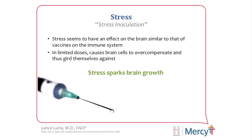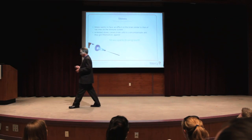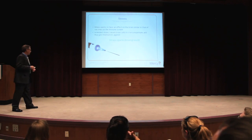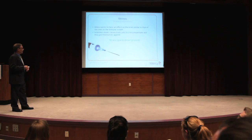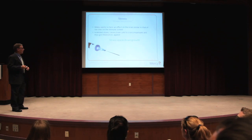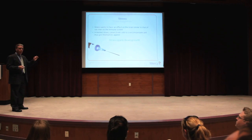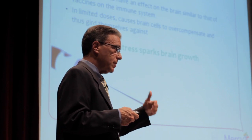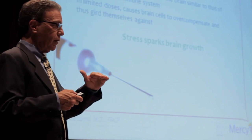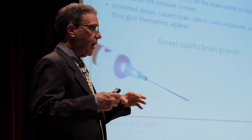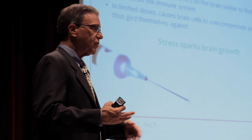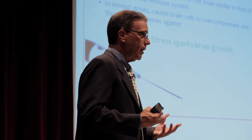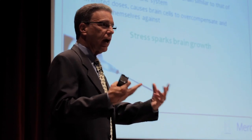Stress seems to have an effect on the brain similar to that of vaccines on the immune system. In limited doses, it causes brain cells to overcompensate and thus gird themselves against stress. Stress sparks brain growth — this was discussed by the author of the book Spark. The point is that stress promotes growth; you'd think it would be the opposite. Too much stress is the opposite, but you need a certain amount. If you sit like a bump on a log and never move, you have a smoldering inflammatory process, because the mitochondria are not being motivated to grow. The signals aren't being sent to them, so they spit out free radicals and you have constant inflammation.